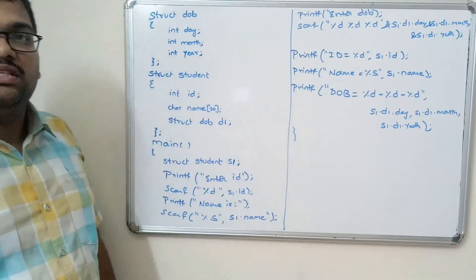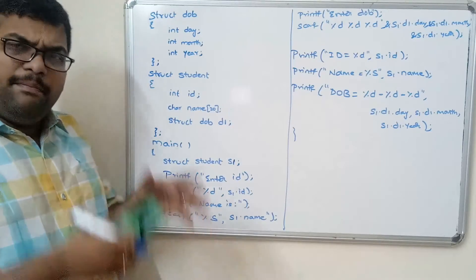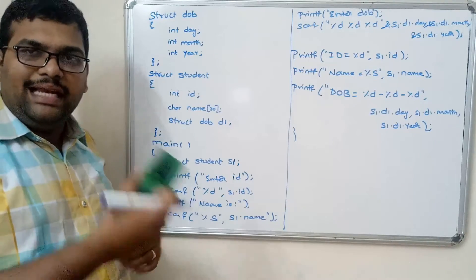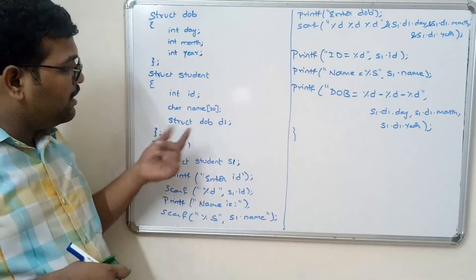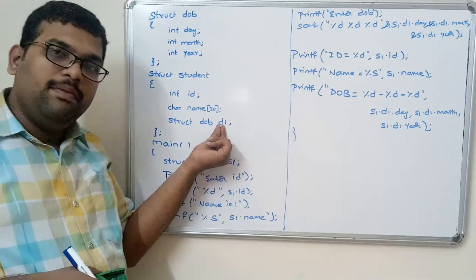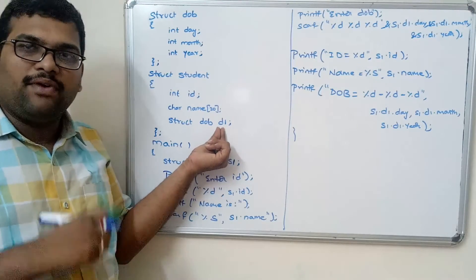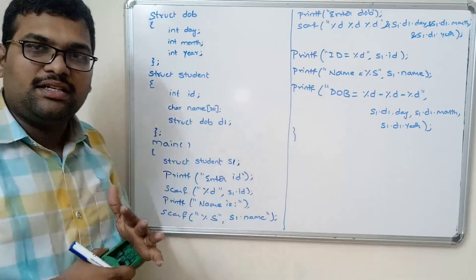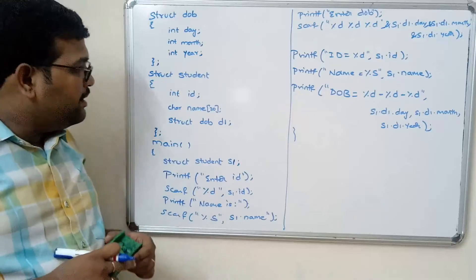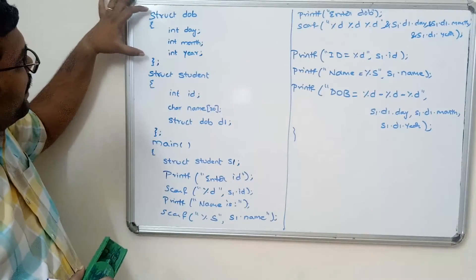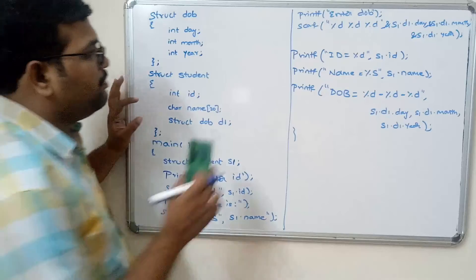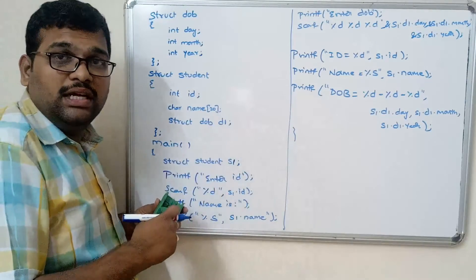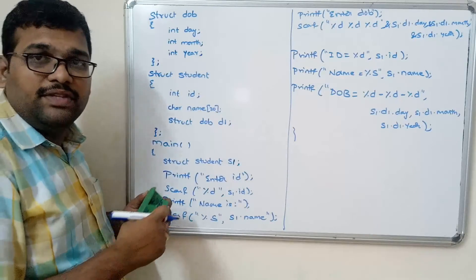This is a simple program and a good example of a nested structure — taking date of birth, which has three members: day, month, and year. We are declaring a structure variable as a member of another structure. Hope you understood this procedure. We can also write this in another way: we can directly define the structure in place of the structure variable declaration.